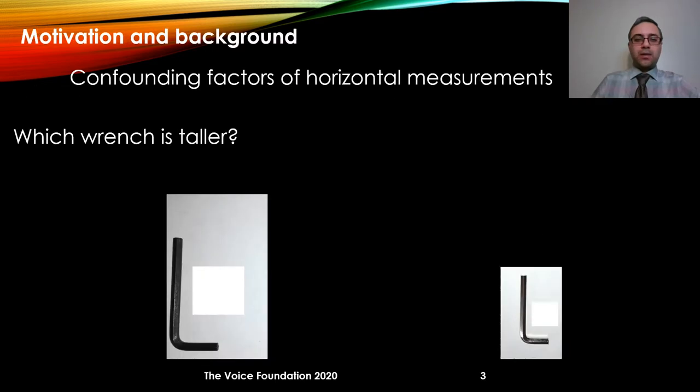In order to do horizontal measurement from images, first we need to find the confounding factors and then we need to account for them.